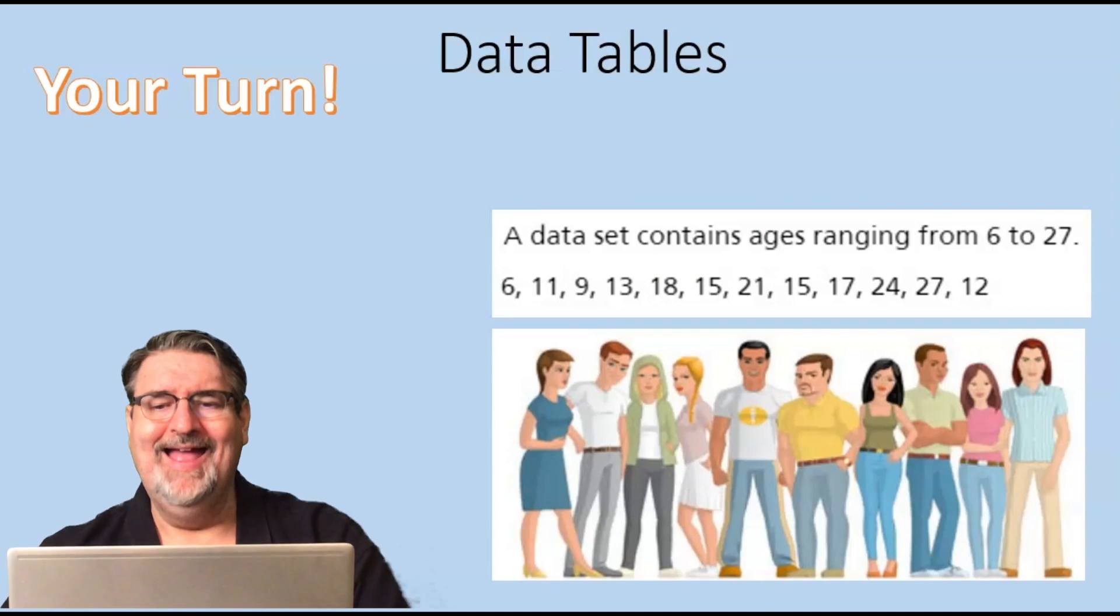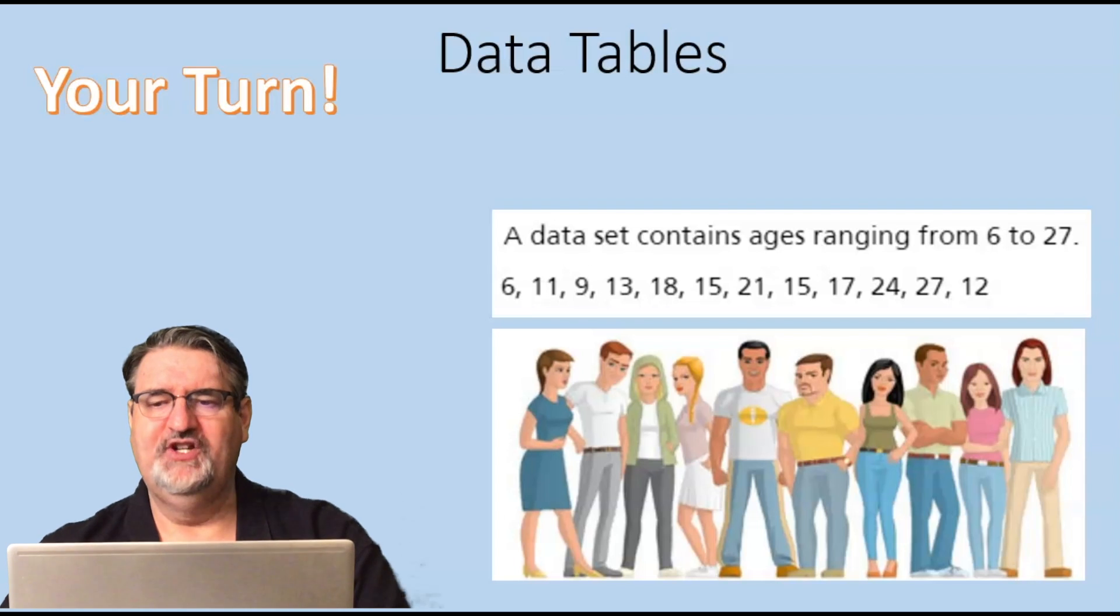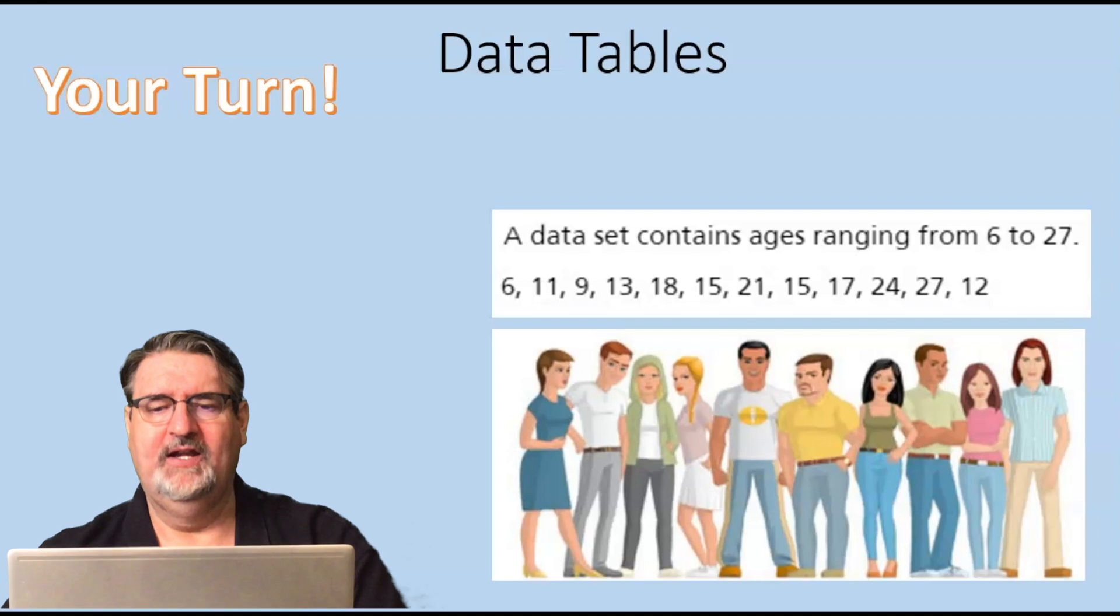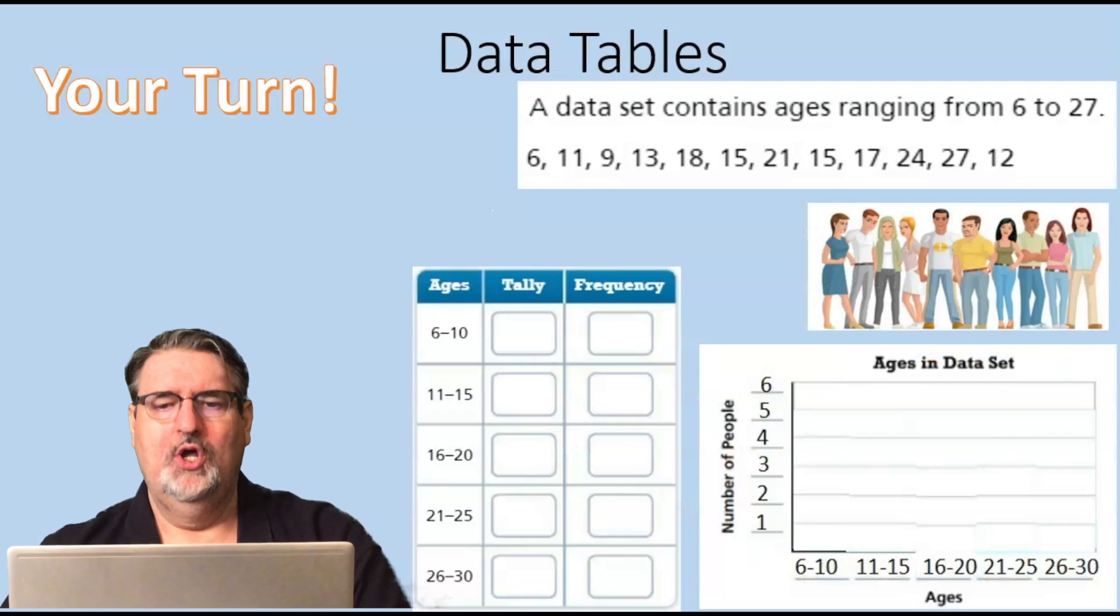All right, now it's your turn. A data set contains ages ranging from 6 to 27 and it goes 6, 11, 9, 13, 18, 15, 21, 15, 17, 24, 27, and 12. So let's make a data table and then after that let's make a graph. And for this we're going to give you two minutes. Good luck.